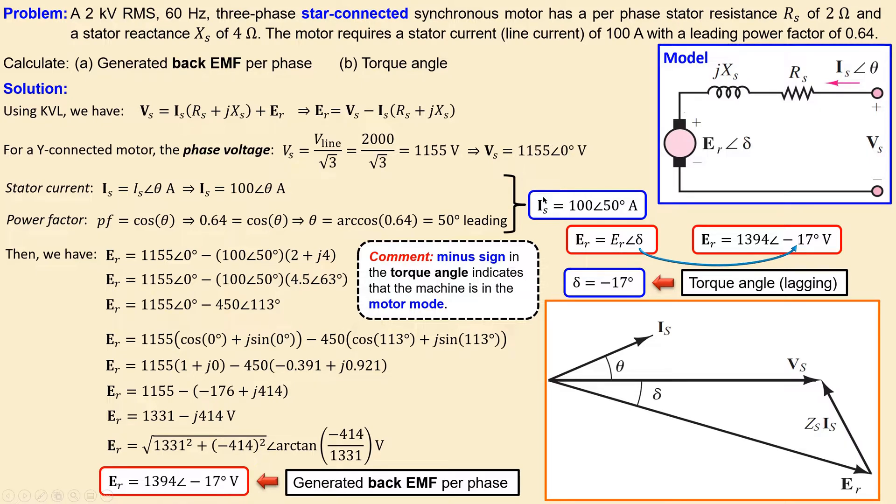We also know our current has a 50-degree phase—that's theta—and a value of 100 amps. We know our delta, which is minus 17 degrees.